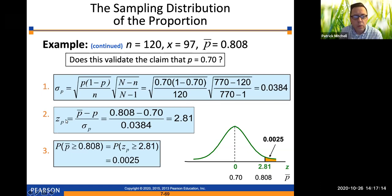So when we do the z score, first of all, p bar is x divided by n. 97 divided by 120 is about 0.808. So 0.808 minus 0.7, and then divide that by 0.0384 comes out to about 2.81. So the probability of getting a sample proportion this high is the probability that z is greater than or equal to 2.81, which is only 0.0025.